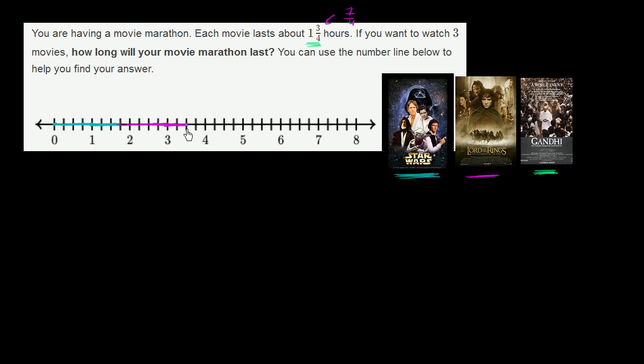We could do that as 4 fourths plus 3 fourths hours, or 7 fourths: 1, 2, 3, 4, 5, 6, 7. That gets us to 5. This point right over here is 5 and 1 fourth hours.